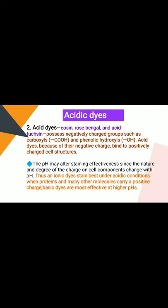Acidic dyes — examples include eosin, rose bengal, and acid fuchsin — possess negatively charged groups such as carboxyl and phenolic hydroxyl. Because of their negative charge, acid dyes bind to positively charged cell structures. One important factor is that pH may alter staining effectiveness, since the nature and degree of charge on cell components changes with pH. Ionic dyes work best under acidic conditions when proteins carry a positive charge, but basic dyes are most effective at higher pH.